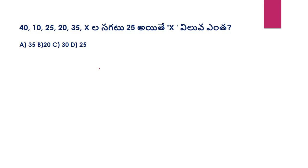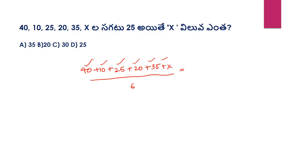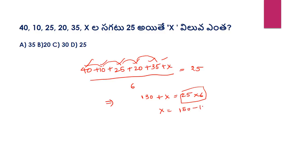So 40 plus 10 plus 25 plus 25 plus 35 plus x divided by 6. That gives 80 plus x equals 25 into 6, so 80 plus x equals 150, so x equals 20. The answer is B: 20.